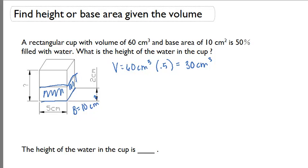And now we want to figure out what the height is. Well, the height we can find just by using that formula, volume equals big B times H. Remember, big B stood for base area. We know that the base area of this rectangular cup is 10. So we could do 30 equals 10 times H, which would mean H equals 3 centimeters. So that tells me the height of the water in the cup is 3 centimeters.